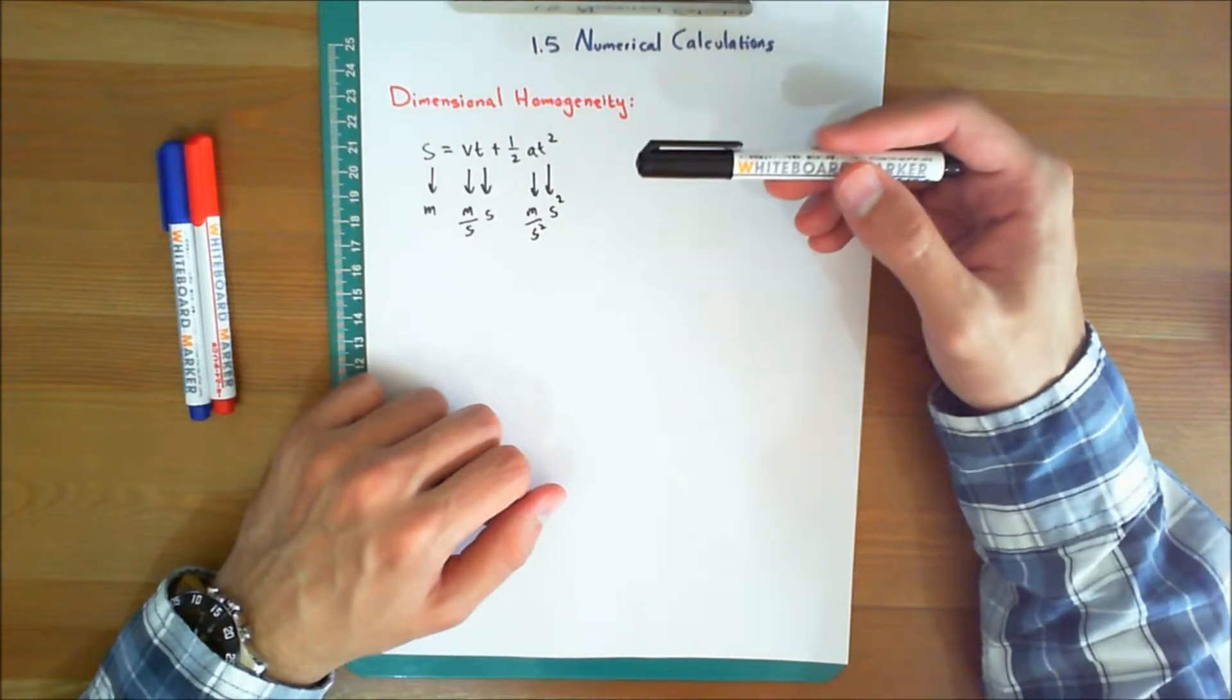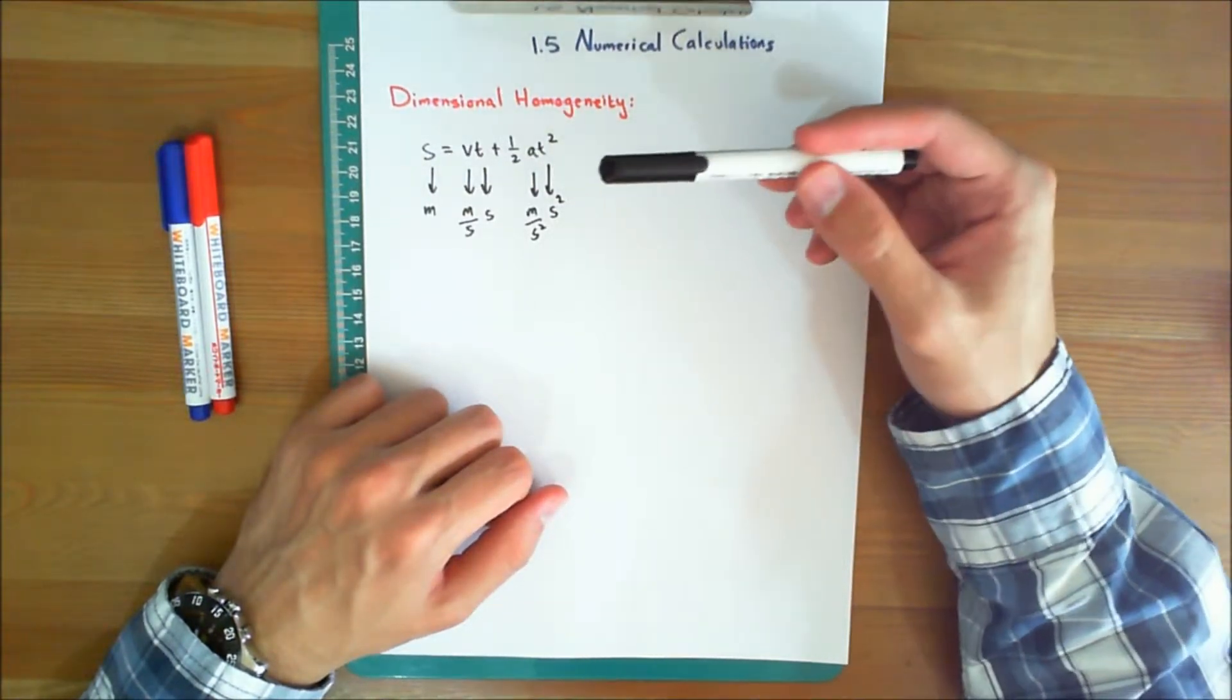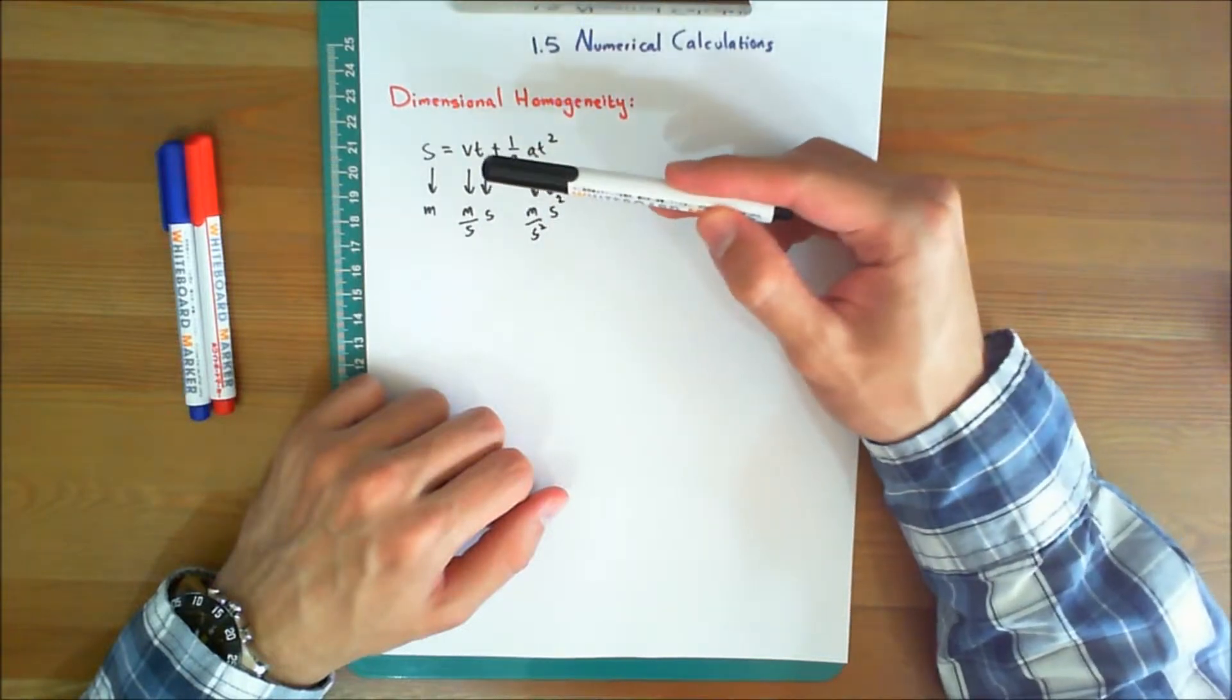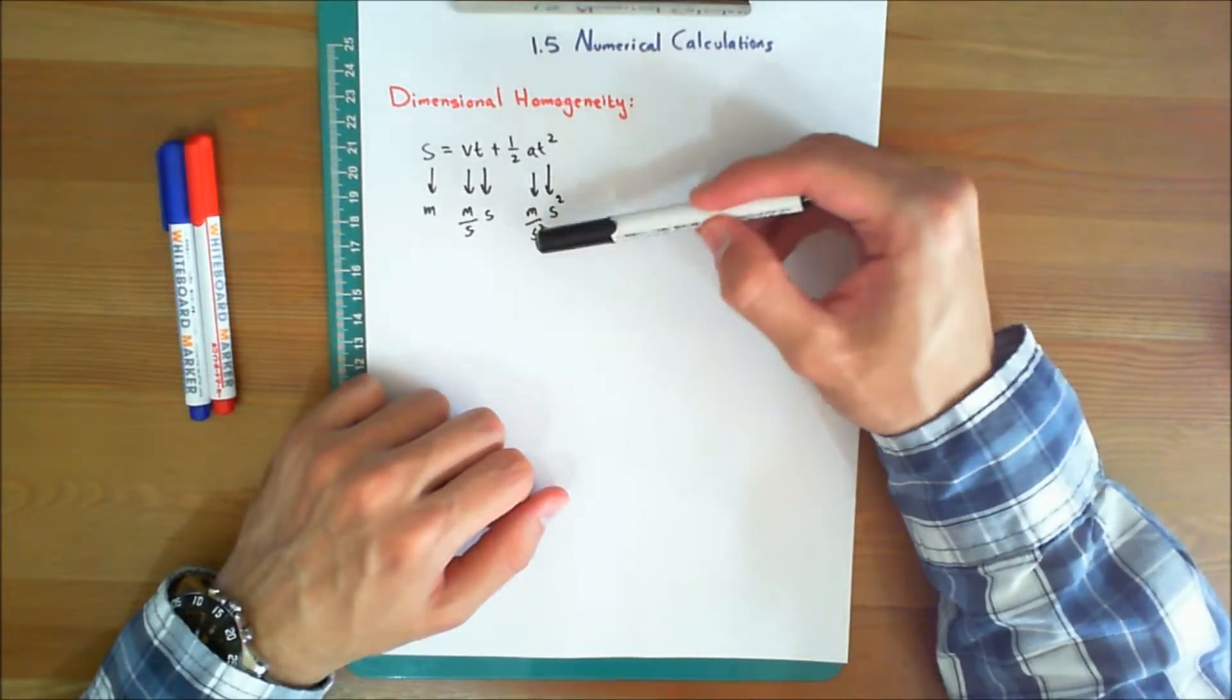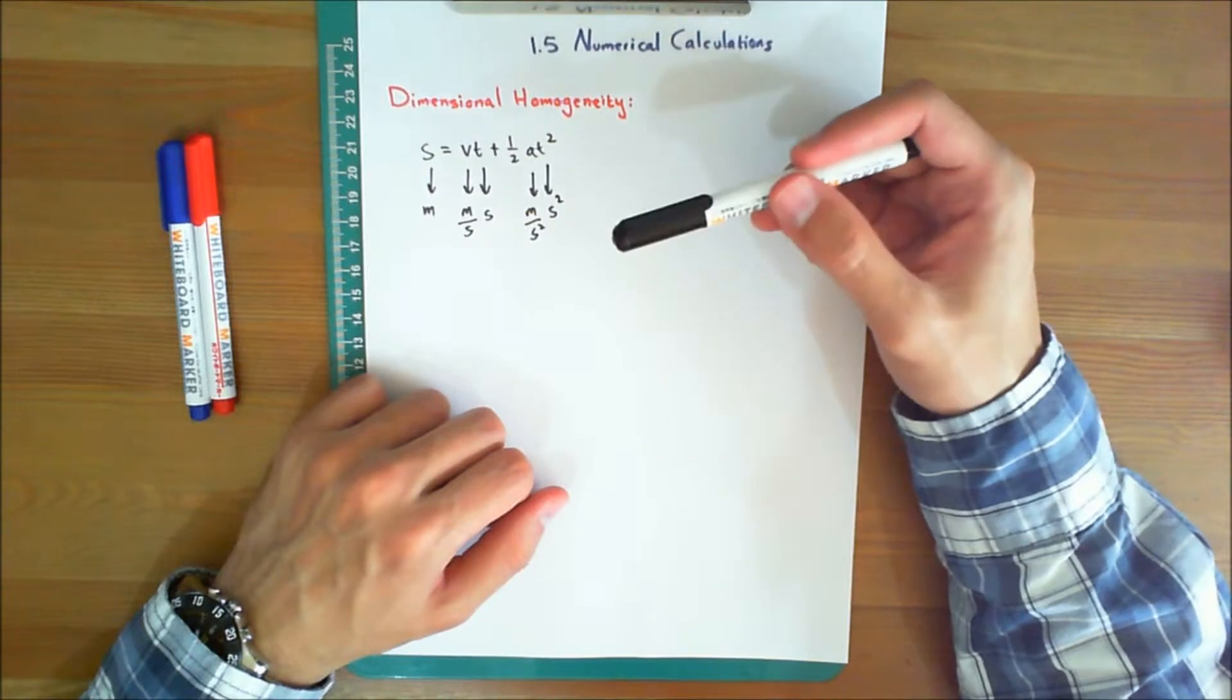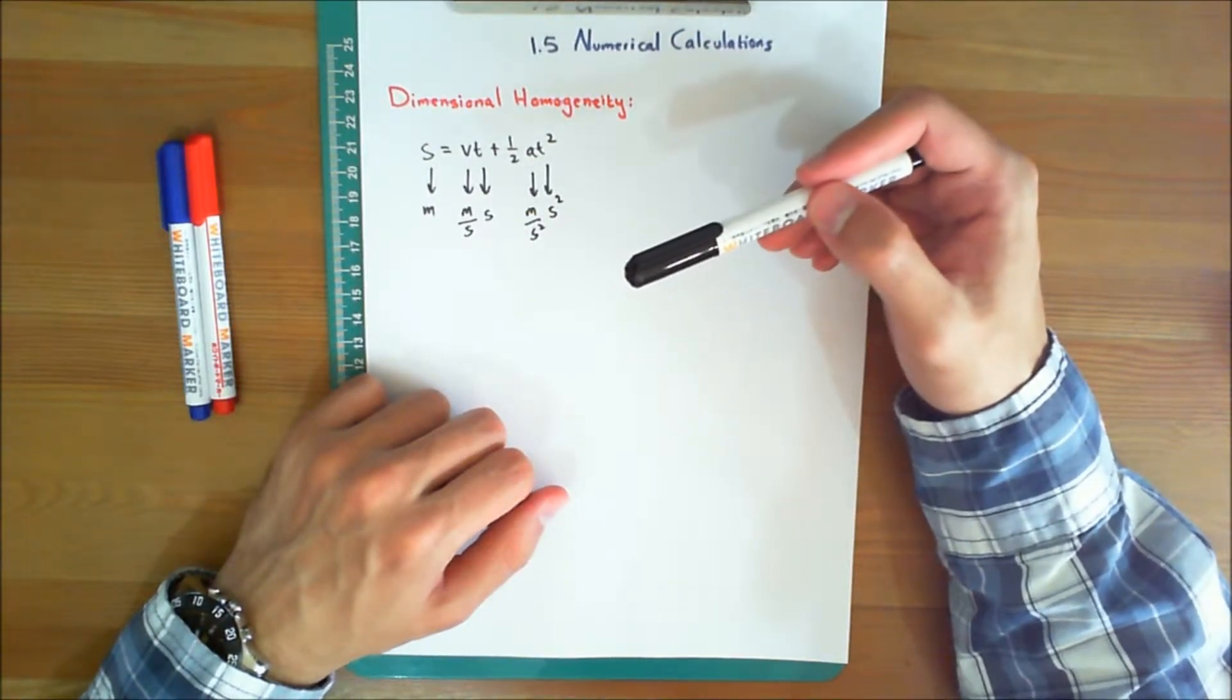Consider, for example, the equation S equals Vt plus half At squared, where in SI units, S is the position in meters, T is time in seconds, V is velocity in meters per second, and A is acceleration in meters per second squared. Regardless of how this equation is evaluated, it maintains its dimensional homogeneity. In the form stated, each of the three terms is expressed in meters.